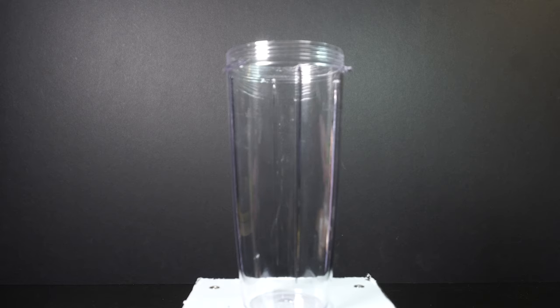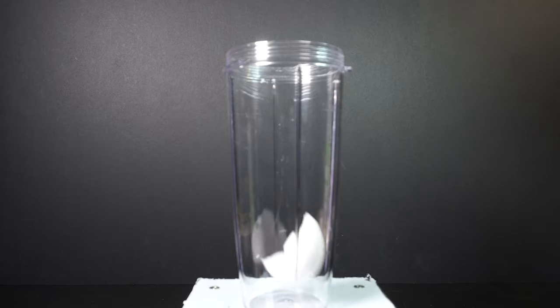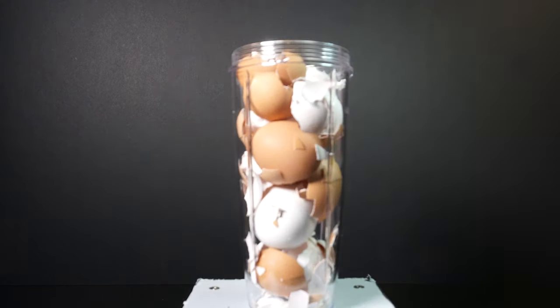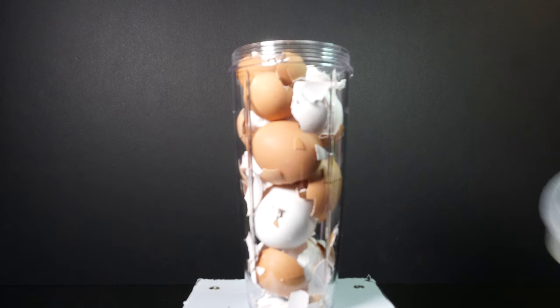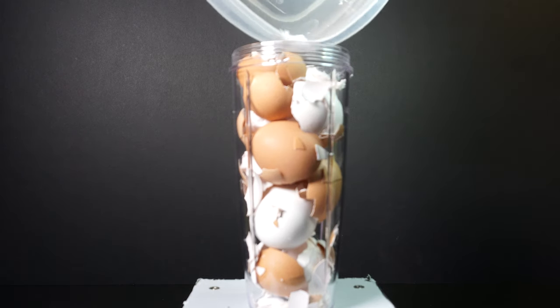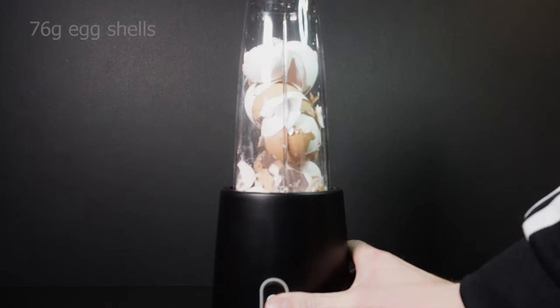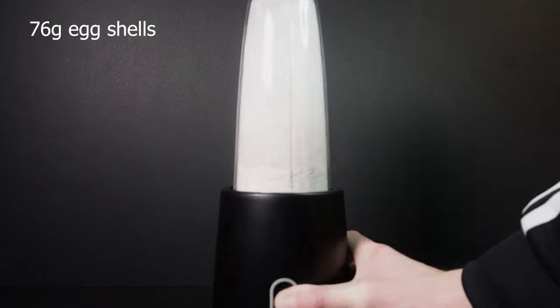The first thing we need to do is grind up all of the dry eggshells in a blender. I pre-cleaned my eggshells in water and waited for them to dry. This will help the other proteins from the yolk to be washed off. Otherwise I would have more to filter off later. The total weight of the eggs was 76 grams dry.